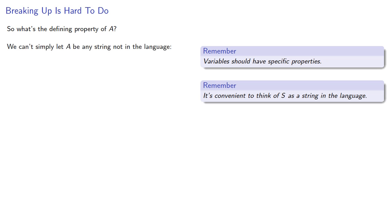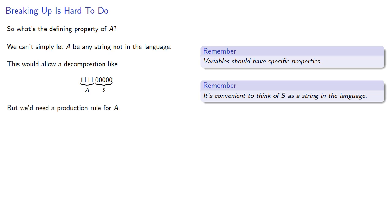We can't simply let A be any string not in the language — this would allow certain decompositions, but the problem is we need a production rule for A. The obvious rule, something like A produces 1A, would allow the production of an endless string of 1s, and then we might not be able to concatenate it with a string in the language to produce another string in the language.